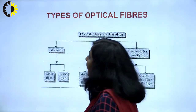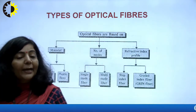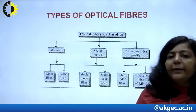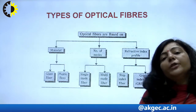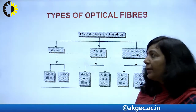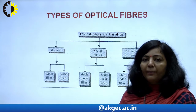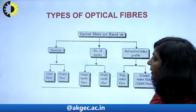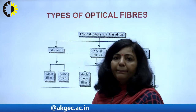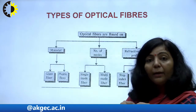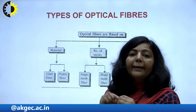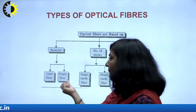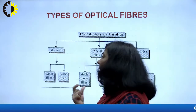In order to classify optical fibers into different groups, there are different criteria. The first criteria is material — the material from which the core and cladding are made. Depending upon that material, either you have glass fibers or plastic fibers.